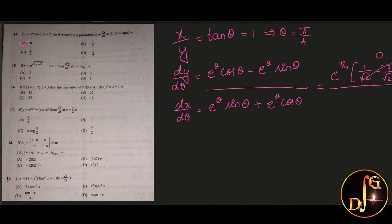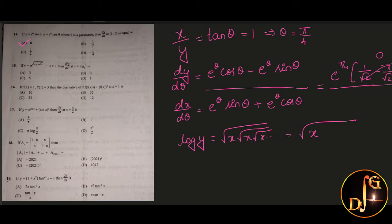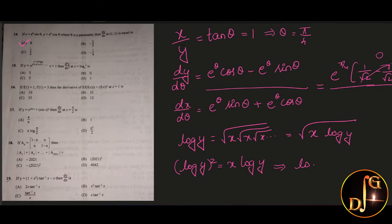Next, if y is equal to e^(√x · √x · √x · √x ...) so on, apply log on both sides. We get log y equal to √x · √x · √x ... so on, which is nothing but √x into log y. Now squaring on both sides, (log y)² will be equal to x · log y. Cancelling log y from both sides, log y equals x.